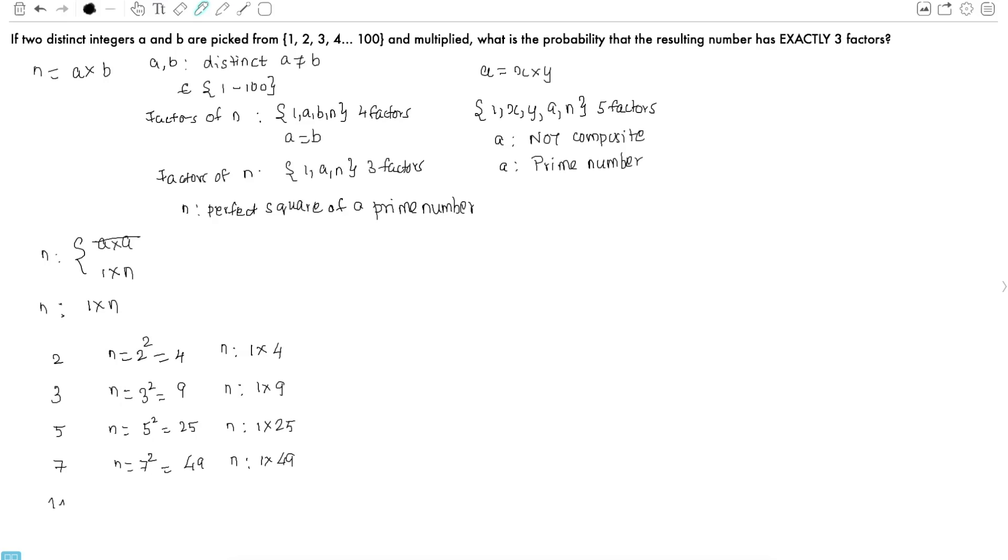The next prime number is 11. So n equals 11 squared, which is 121. However, this case is no longer applicable because n should contain only values that are between 1 and 100, and 121 is out of the range. So we cannot consider any more prime numbers which are greater than 7. So we have only 4 possible values to consider.